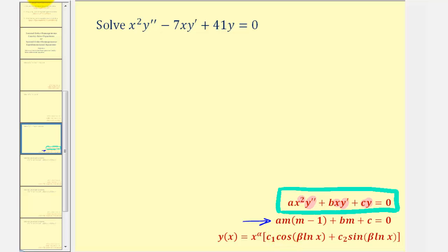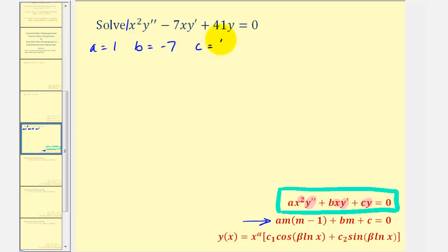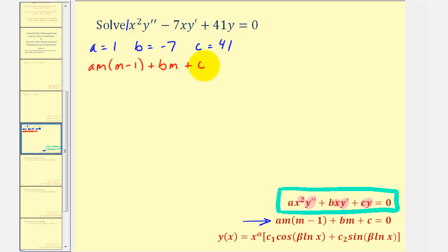Looking at our differential equation, let's identify the values of a, b, and c. Here, a is equal to one, b is equal to negative seven, and c is equal to positive forty-one. Using the auxiliary equation, am times the quantity m minus one, plus b times m, plus c equals zero, we'll substitute the values of a, b, and c and solve for m.